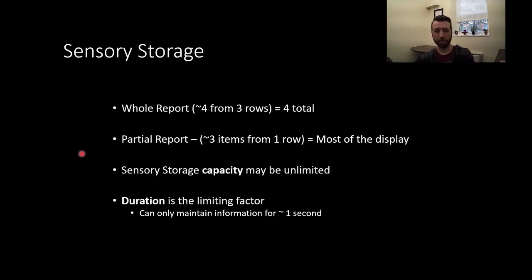So in this instance, most people get maybe about three items correct from one row compared to about four items from the total of three rows. What this shows us is that sensory storage's capacity may be unlimited, but duration is a limiting factor. Because our sensory storage is so transient and brief, you can only maintain the information for about a second. It's usually just a race to how many things you can recall before it's gone. So our capacity may be unlimited, but our ability to work with that information is very, very brief.